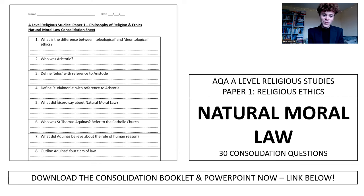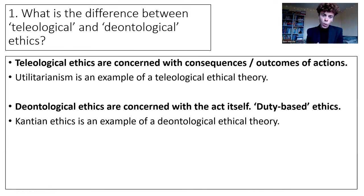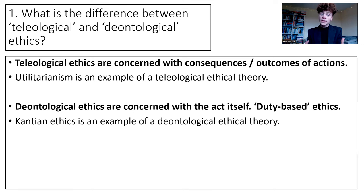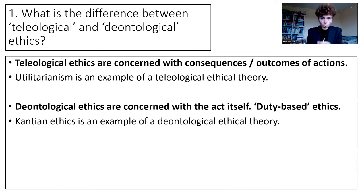Question one: what is the difference between teleological and deontological ethics? Teleological ethics are concerned with the consequences and outcomes of actions. Utilitarianism is an example of a teleological ethical theory — it's all about calculating what action will bring about the greatest good for the greatest number. So if it's teleological, it is outcome and consequence-based, whereas deontological ethics are concerned with the act itself — the idea that certain things are intrinsically good and others intrinsically bad.